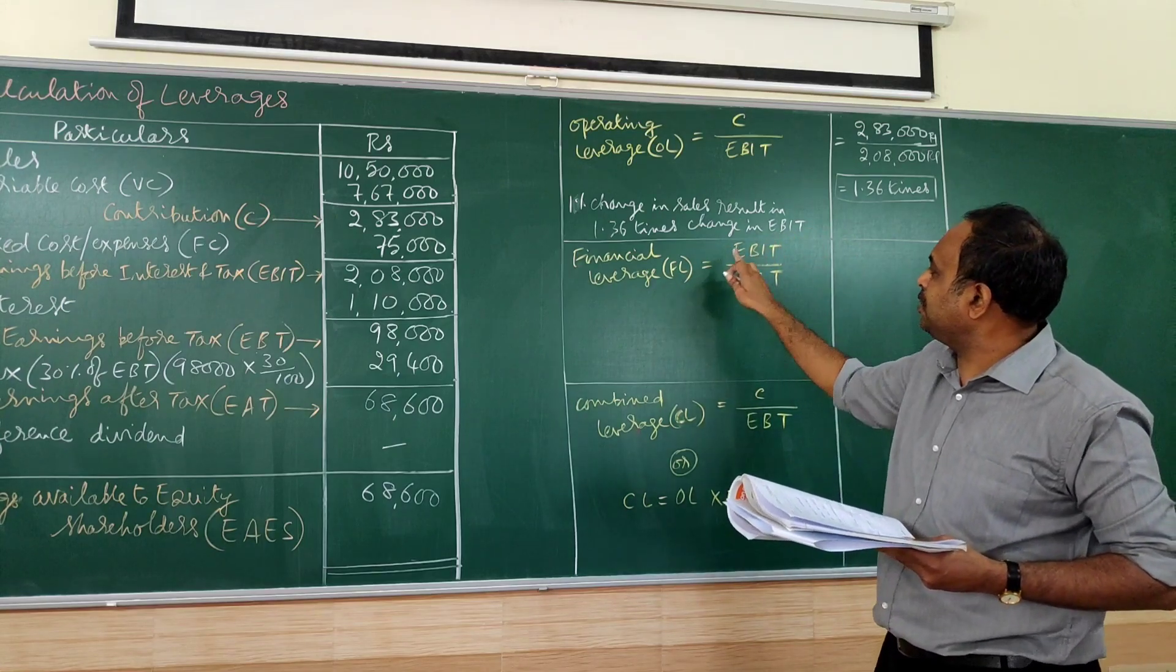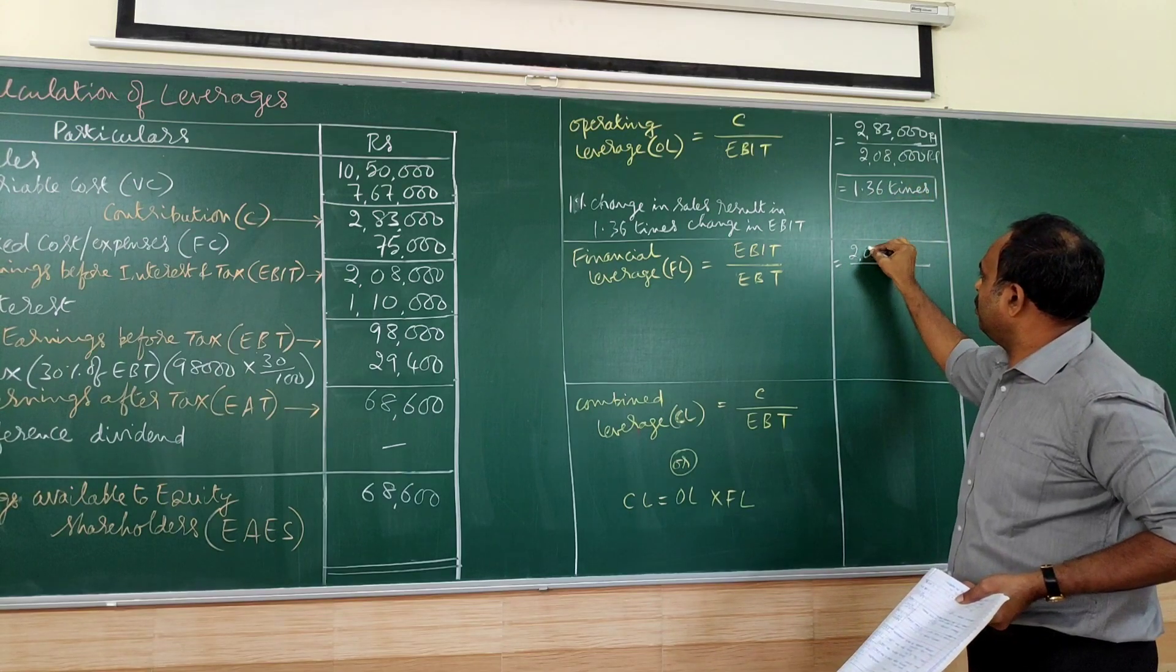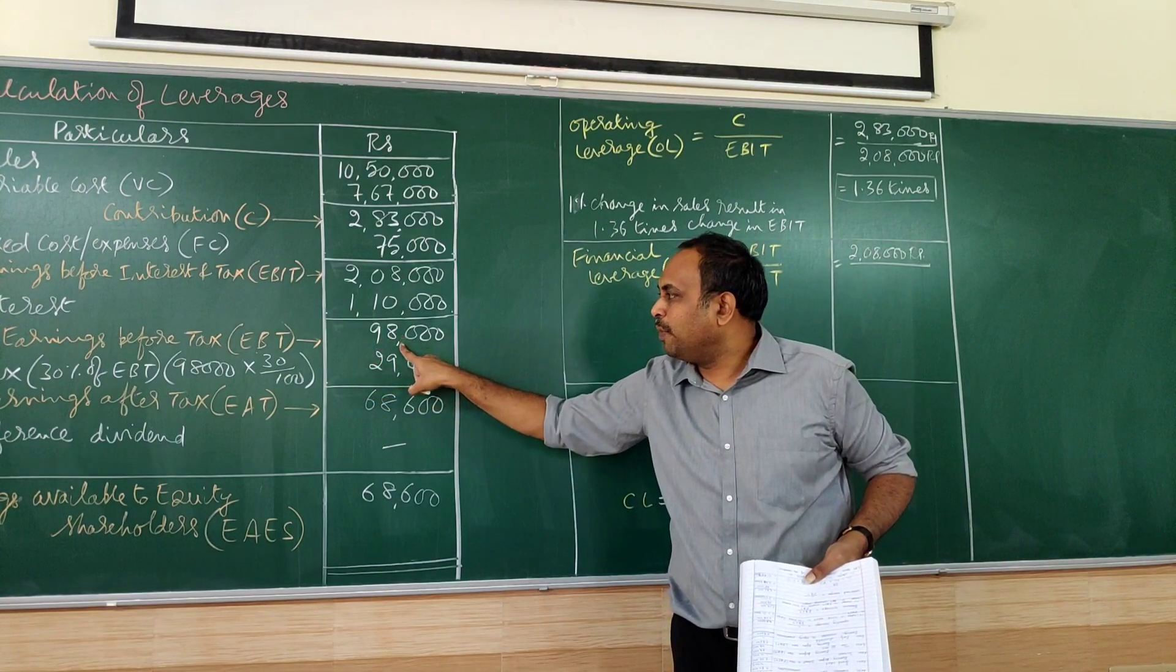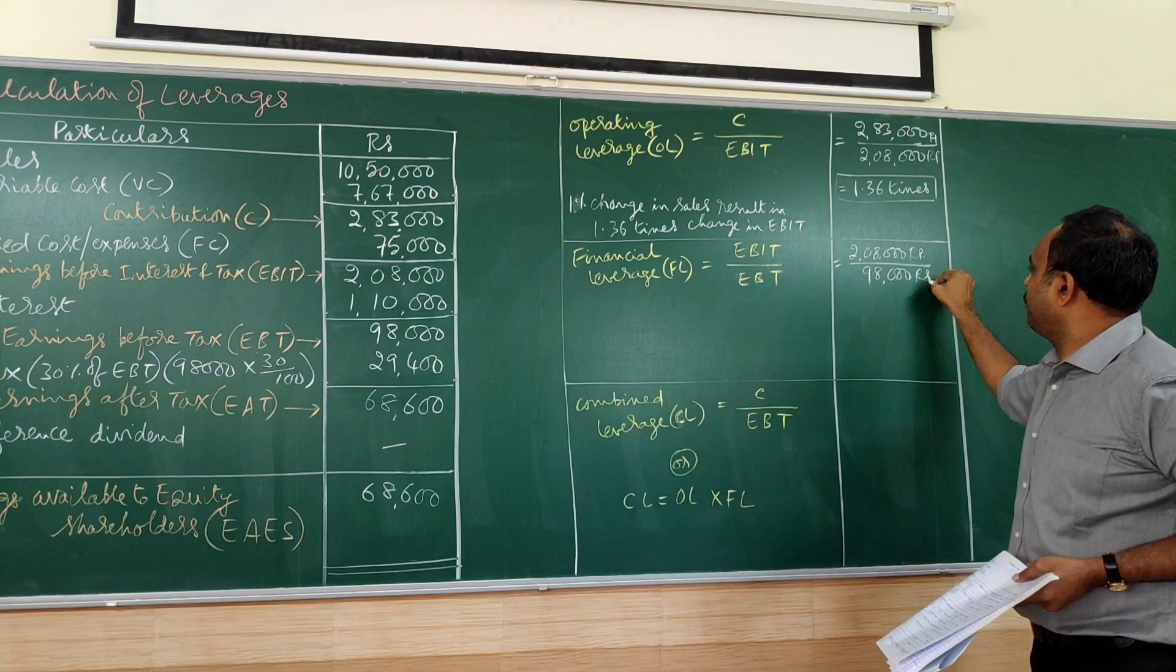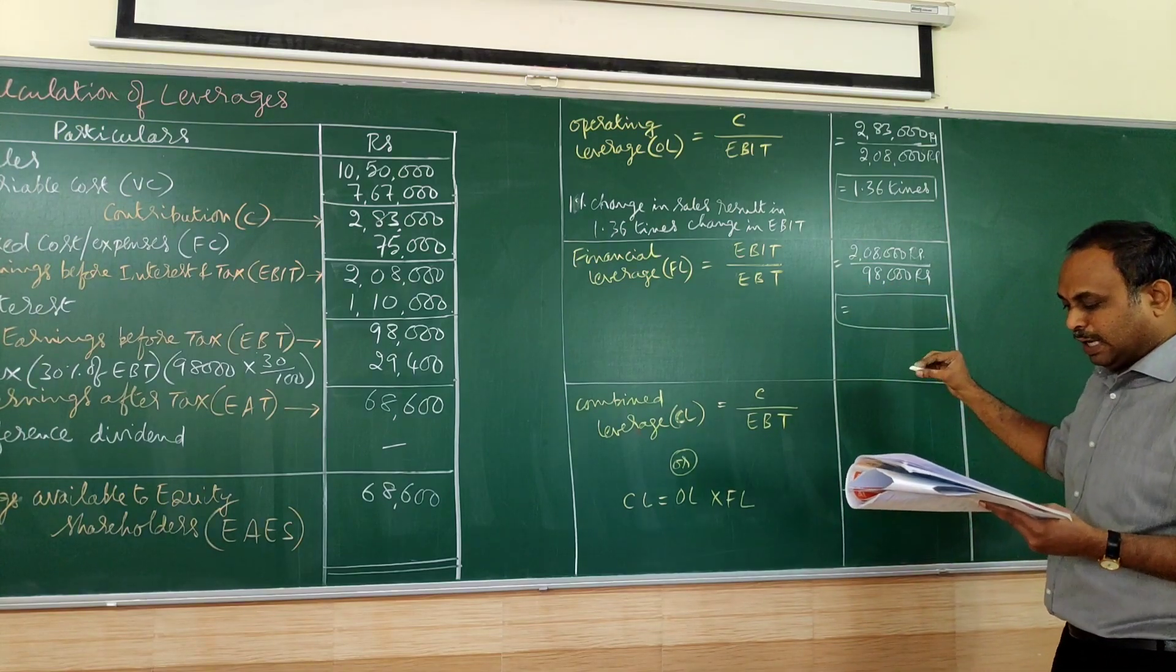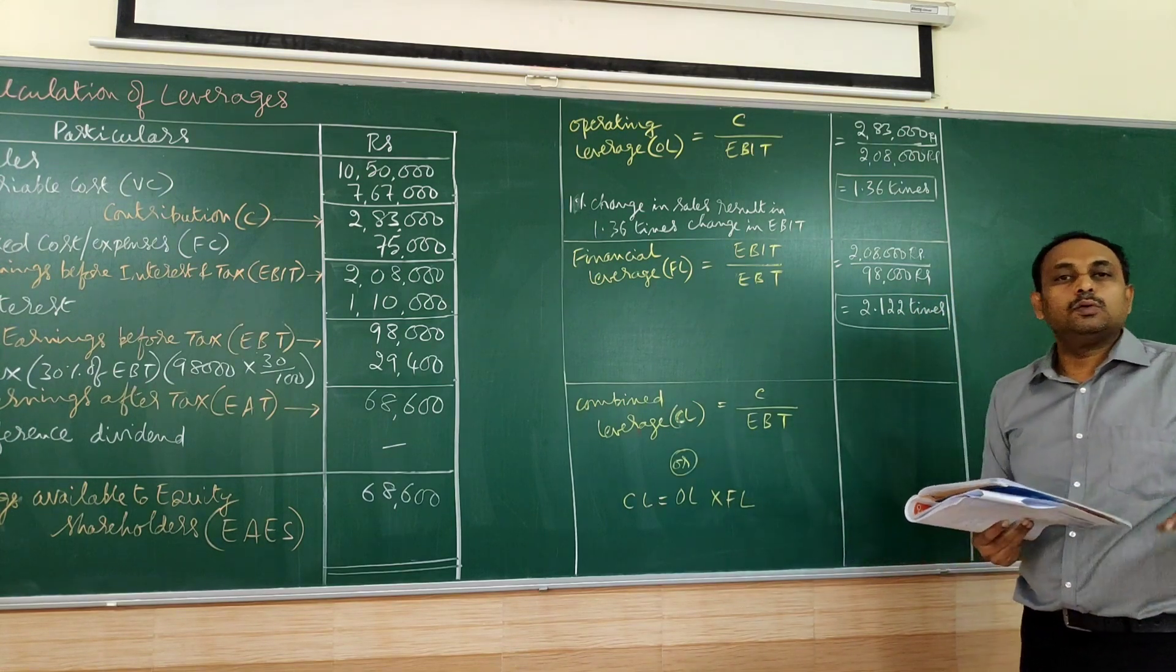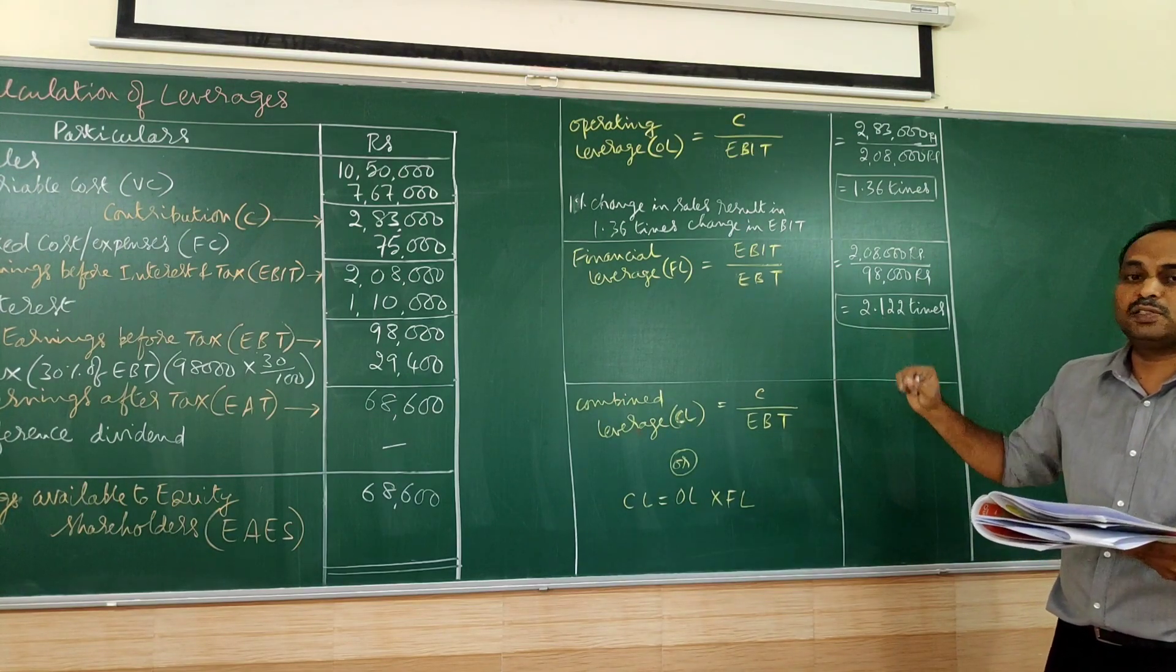Next, financial leverage is EBIT divided by EBT. EBIT we have 2,08,000. EBT is earning before tax, 98,000. So if we divide, we are going to get a value here as 2.122 times. So here again times, not in percentage. So what is the significance of this?